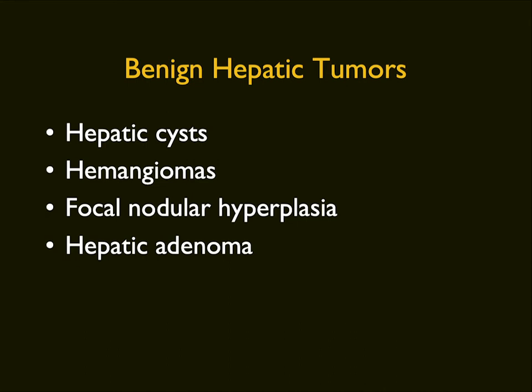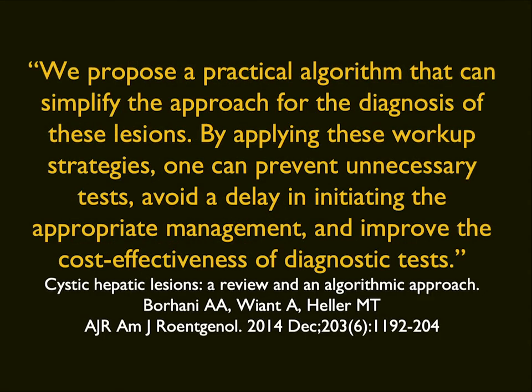Looking at benign hepatic tumors, it's like giving a lecture on the spleen or kidney — most renal lesions are cysts, most splenic lesions are cysts, hemangiomas, or hematomas. Most hepatic lesions are not mets or hepatoma; they're benign, be it hepatic cysts or hemangiomas. We also have FNH and hepatic adenoma, though hepatic adenoma is typically considered a premalignant condition. A lot of the lesions we pick up are cysts — small cystic lesions.